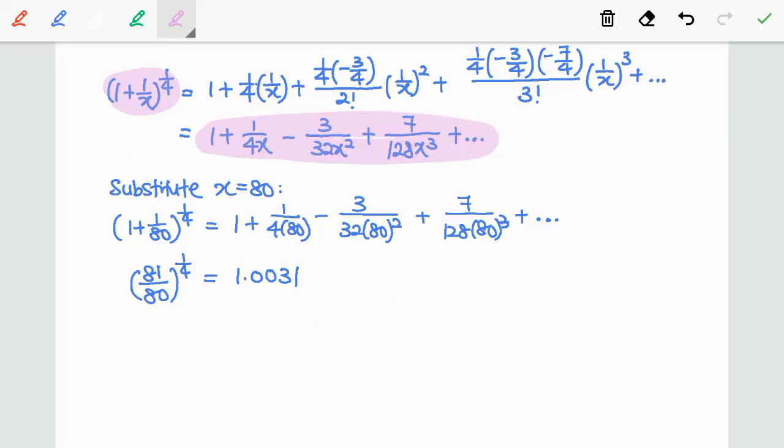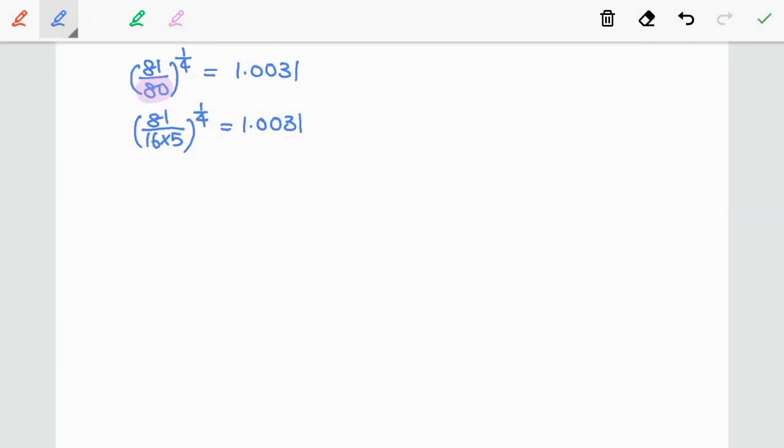Now, we have to simplify the left hand side again until we obtain fourth root of 5. So, rewrite 80 as 16 times 5. The right hand side remains the same. Then, apply the rules of indices. We have 81^(1/4) over 16^(1/4) times 5^(1/4).